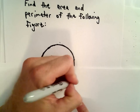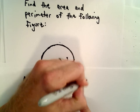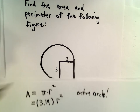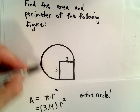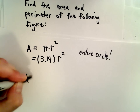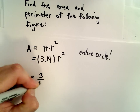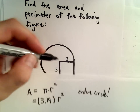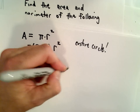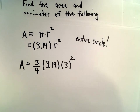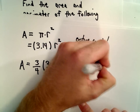But this is the area for the entire circle, and that's going to be the formula for the entire circle. We don't have the entire circle — we've only got three-fourths of the circle. So the area for us is going to be three-fourths of 3.14, and the radius of this circle is going to be 3, so we'll have 3 squared. I'm multiplying by three-fourths because we don't have the entire circle; we have three-fourths of a circle.